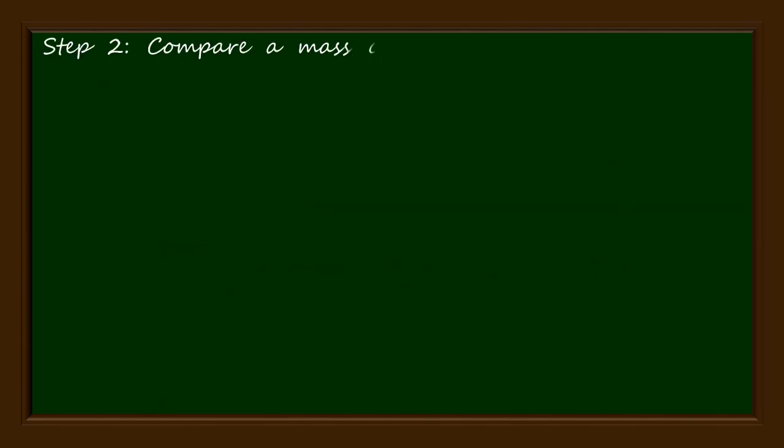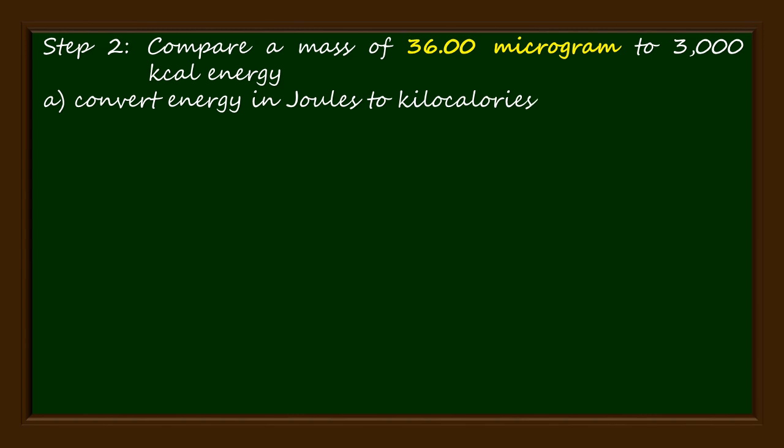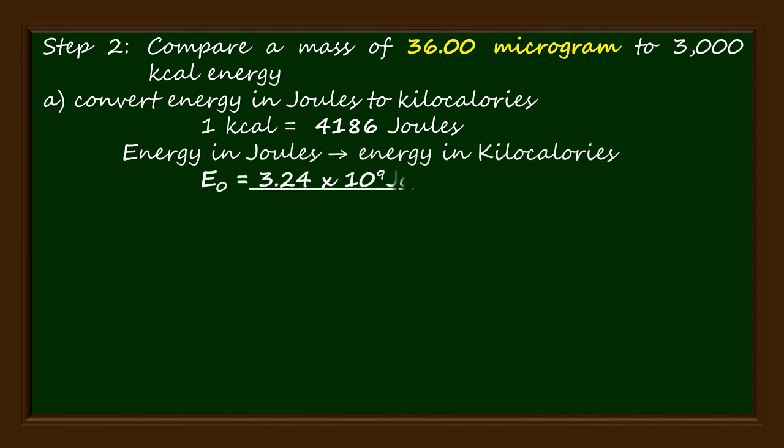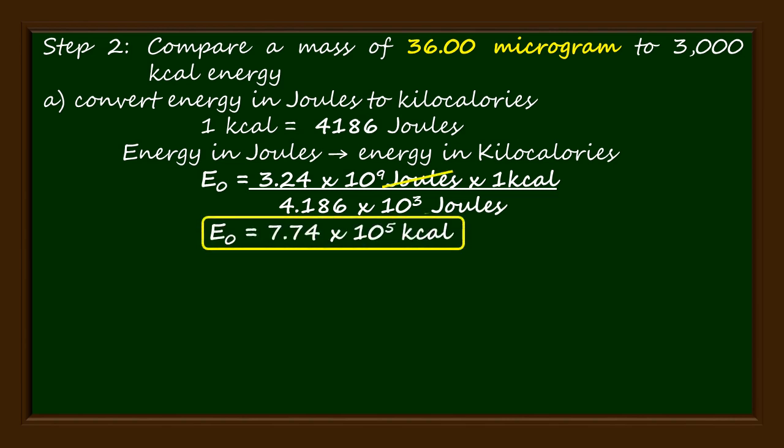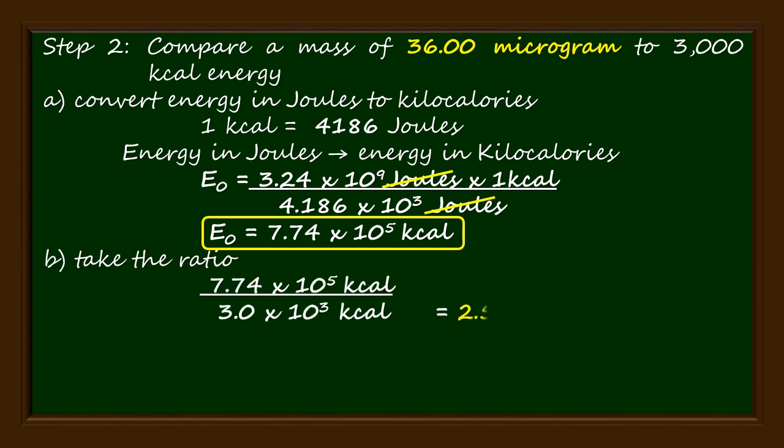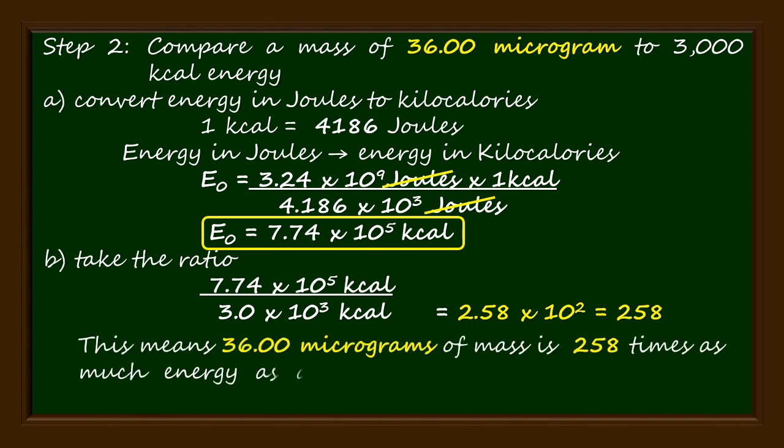Step 2: Compare a mass of 36.00 micrograms to 3000 kilocalories of energy. Convert energy in joules to kilocalories by using the conversion factor 1 kilocalorie equals 4186 joules. After the energy in joules was converted to kilocalories, we obtained the value 7.74 times 10 to the 5th kilocalories. Then take the ratio of the obtained energy in kilocalories to 3000 kilocalories. The obtained quotient is 258. This means 36.00 micrograms of mass is 258 times as much energy as an average person's food consumed in one day.